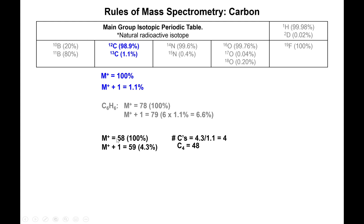The original mass is 58, so subtracting 48 — the mass of the four carbons — gives you 10. Since hydrogen has an atomic mass of 1, this tells you that your formula is C4H10.